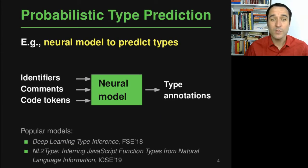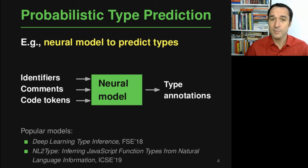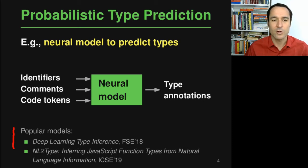One popular way of doing probabilistic type prediction is neural models. These are deep learning-based models that look at source code and some pieces of information in order to suggest type annotations. For example, they look at identifiers, which often give great hints about types, at comments for their natural language information, and at code tokens. There have been several popular models proposed over the past few years, and we compare to those in this work.